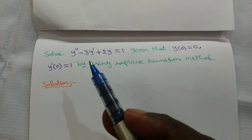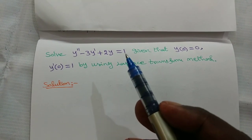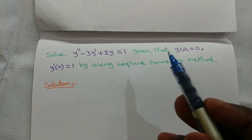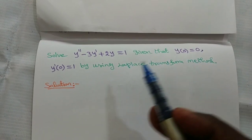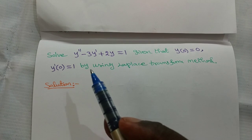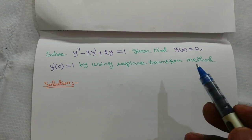Solve y double dash minus 3y dash plus 2y equal to 1, given that y of 0 equal to 0 and y dash of 0 equal to 1, by using Laplace transform method.